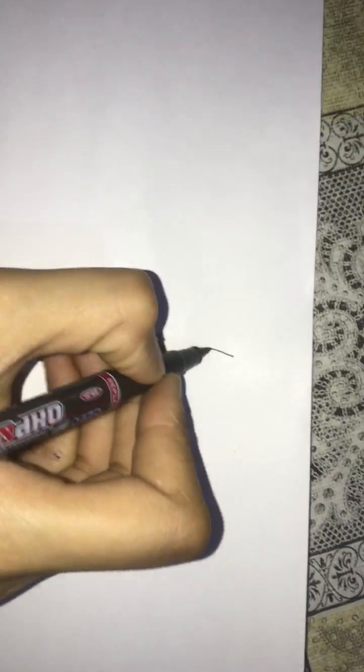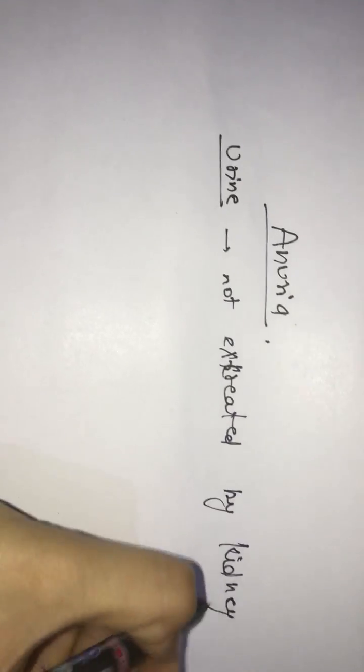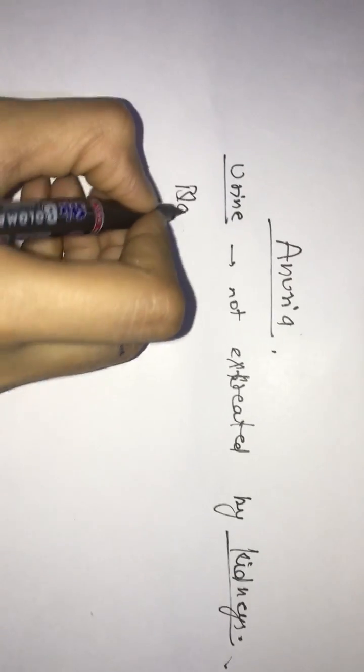In this video, we are learning about anuria. What is anuria first? Anuria means that urine is not excreted by the kidney. This means that the kidney is not excreting the urine. If the urine is not coming, what will we get in the blood?